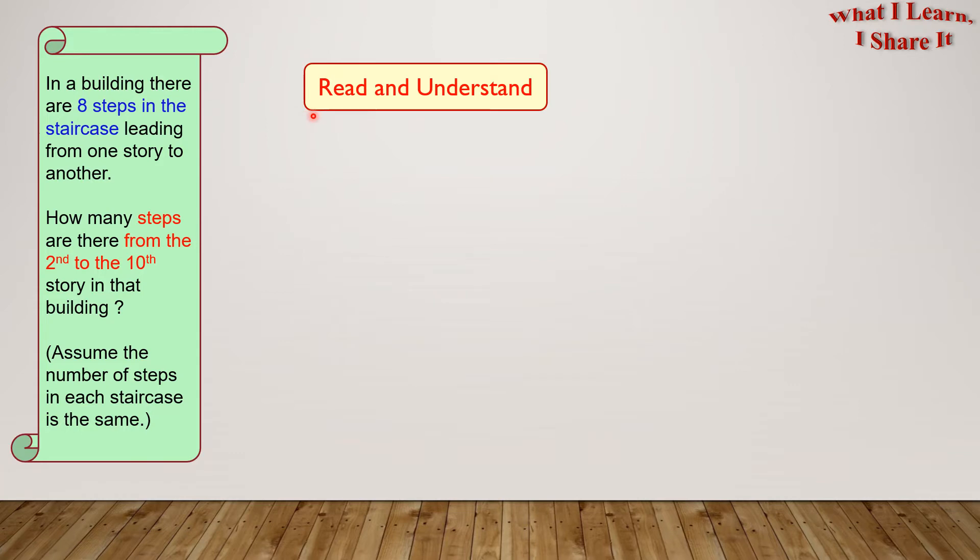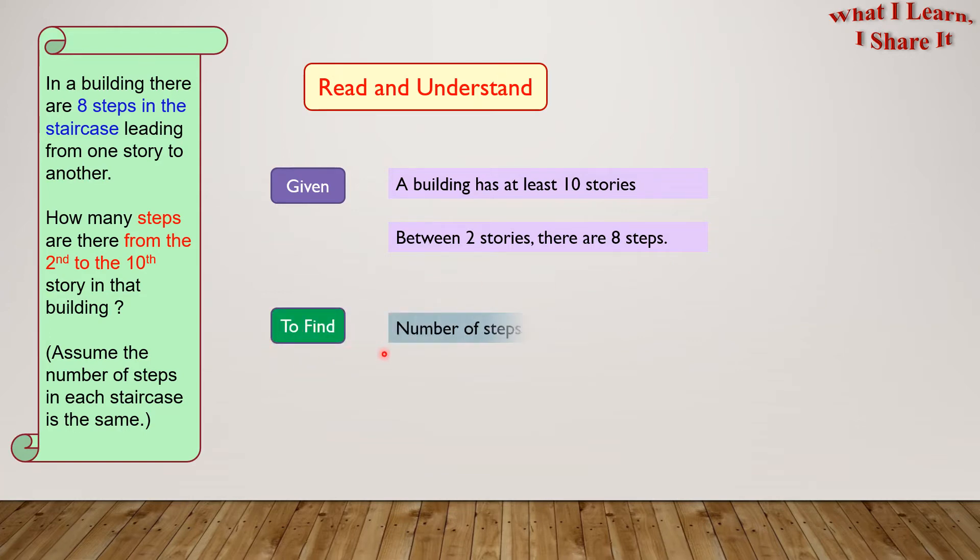Step 1. Read and understand. So what is given to us? We are given that a building has at least 10 stories, and between 2 stories, there are 8 steps. What is there to find? We have to find the number of steps from the 2nd to 10th story.